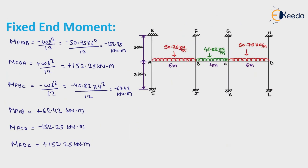Now, calculation of fixed end moments. In the question, we had given specification that our structure is a rigid or fixed jointed frame, meaning the joints in this substitute frame — A, B, C, D, etc. — are fixed. On their joints, end moments are created and we have to calculate their values.